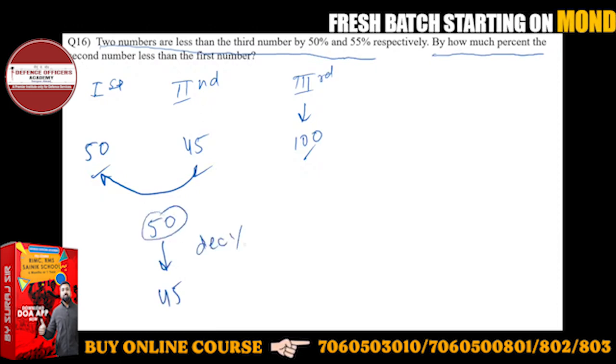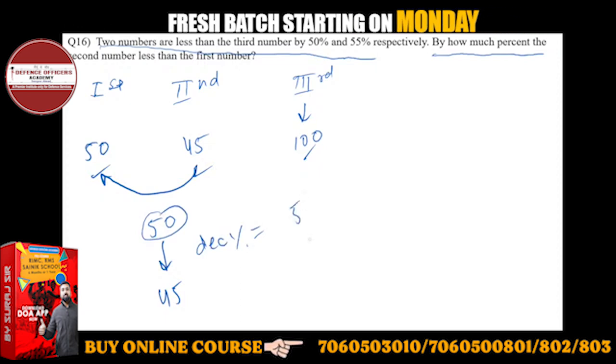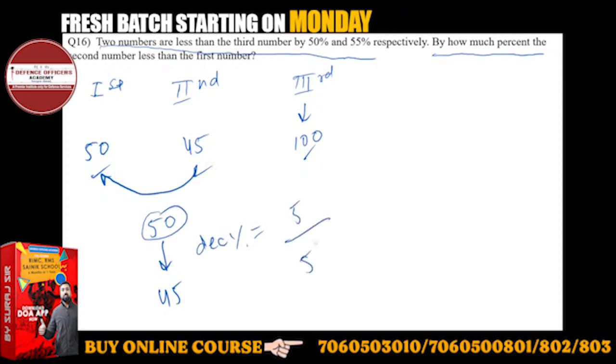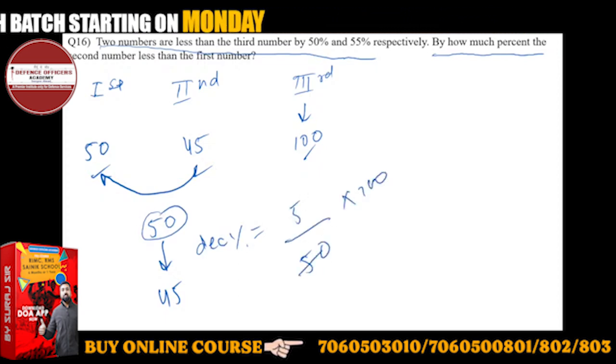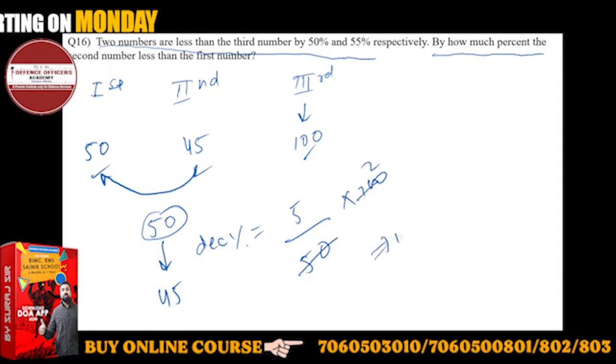You have to find decreasing percentage. The decreasing percentage is decrease value divided by larger value. So 5 divided by 50 equals 10%. That will be the answer. This increasing or decreasing percentage formula is very important.